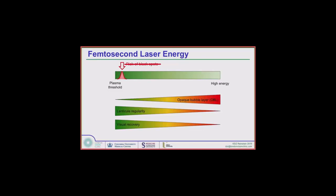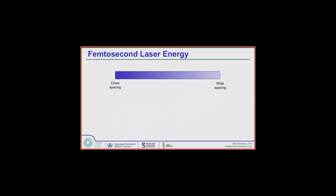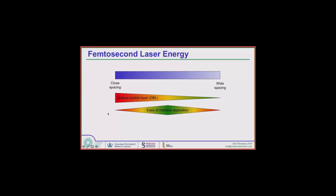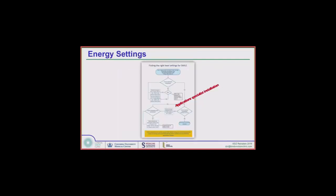You need to be a little backed off the threshold level — that's essentially where the energy needs to be. In terms of spacing, closer spacing makes lenticule separation easier but causes more OBL and more irregular cuts. You need to back off on the closeness of spacing so ease of separation improves, but not too wide, because then ease of separation decreases. Smaller spot spacing also means longer suction time and a greater chance of eye movement or suction loss.